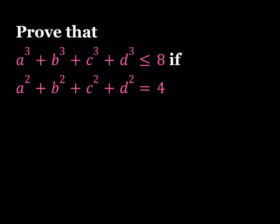Hello everyone. In this video we're going to be proving an inequality. We're supposed to prove that if a squared plus b squared plus c squared plus d squared is equal to 4, a cubed plus b cubed plus c cubed plus d cubed is less than or equal to 8. That's what we're going to prove.